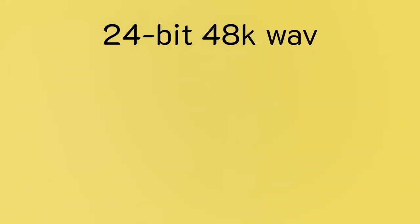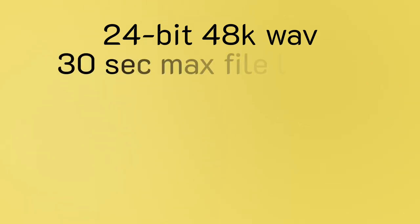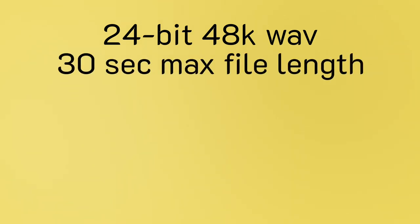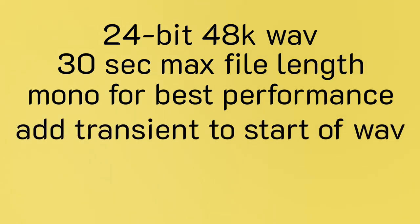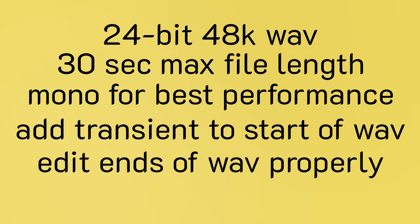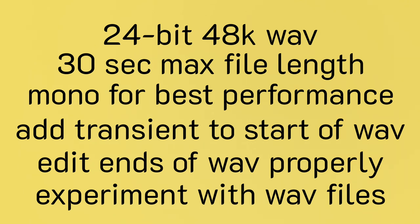Lemon Drop prefers 24-bit 48k WAV files for optimum performance. Only the first 30 seconds of your file will be loaded. Mono audio for best performance, stereo for more possibilities. Make sure your WAV file has an attack at the very start if you plan to use Preserve Attack. Take care to prepare the beginning and end of your files if you plan to use bi-directional looping. Consider using sounds that contain a lot of varied harmonic content. Human voice or speech is a lot of fun to play with.